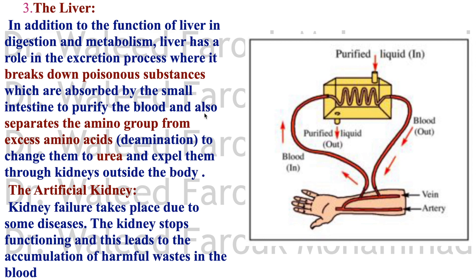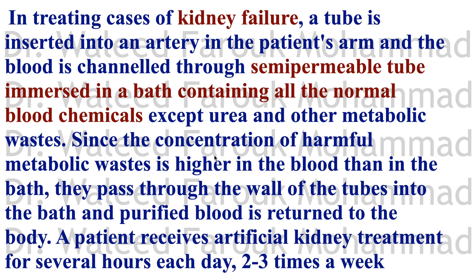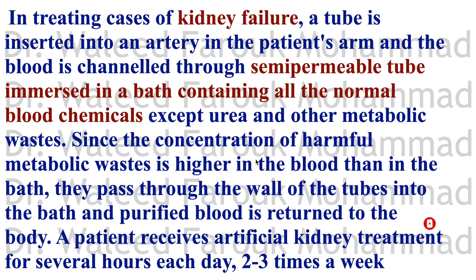The artificial kidney — used for patients with kidney failure — works by diverting blood from the patient's artery through a semi-permeable tube immersed in a bath containing all normal blood constituents. Since the concentration of waste products is higher in the blood than in the surrounding solution, they diffuse out, leaving the blood purified. Patients receive artificial kidney treatment for several hours, two to three times a week.